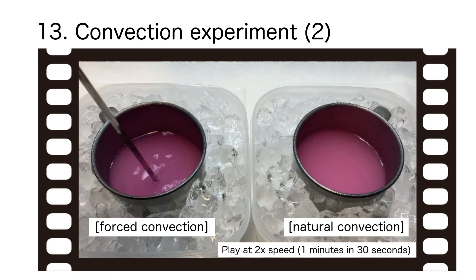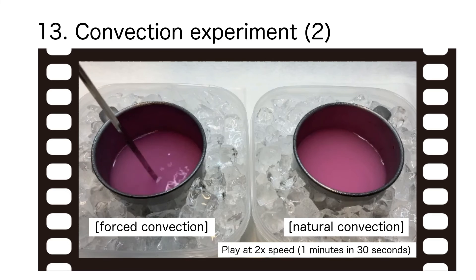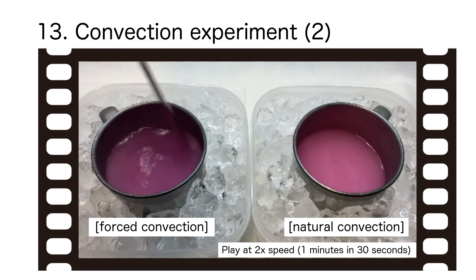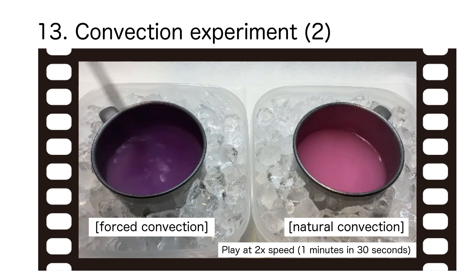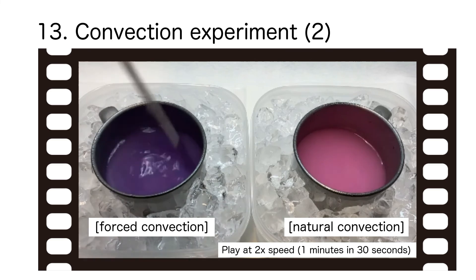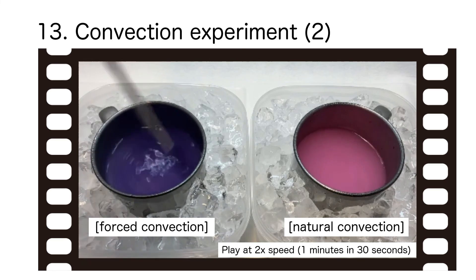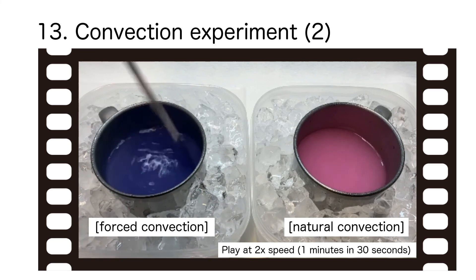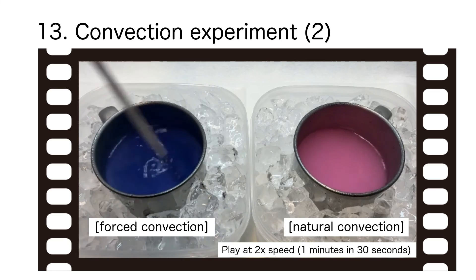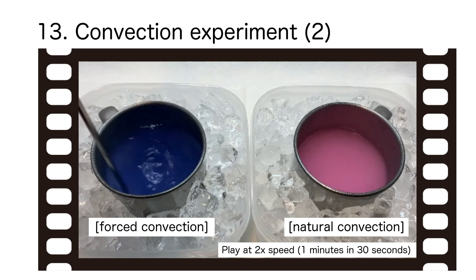Let us confirm the difference in heat transfer due to the difference in flow velocity by experiment. Thermo-ink is put in a mug and the outside is packed with ice to cool it from the outside. The right side of the screen shows natural convection with slow velocity, while on the left side, stirring with a bar spoon generates forced convection with high velocity flow. It can be confirmed that the color of the thermo-ink changes from pink to blue quickly in the mug on the left, where the flow velocity is faster.